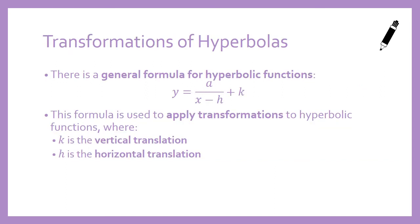So there is a general formula for hyperbolic functions. That's y equals a divided by x minus h plus k. This formula is used to apply transformations to hyperbolic functions, where k is the vertical translation and h is the horizontal translation. Just like with our exponential functions, we can translate the function up and down and left and right.